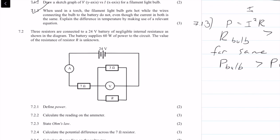Question 7.2: three resistors are connected to a 24-volt battery with no internal resistance. The battery supplies a power of 60 watts to the circuit. The value of resistance R is unknown. Question 7.2.1 asks for a definition: power is the rate of doing work, and we get two marks for that definition.